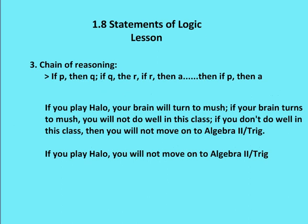Let's talk finally about chain of reasoning. Chain of reasoning just links different conditional statements together. So if you had if P, then Q — P was the hypothesis, Q was the conclusion — then Q becomes the hypothesis and R becomes the conclusion. Then R becomes the hypothesis and A becomes the conclusion. And then we can say if P, then A — linking conditional statements together into an overall chained statement.